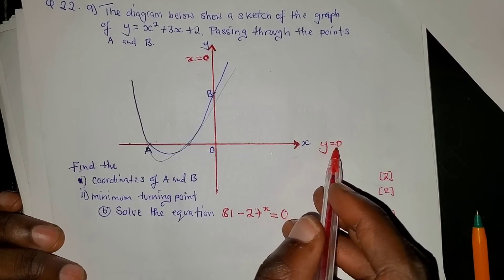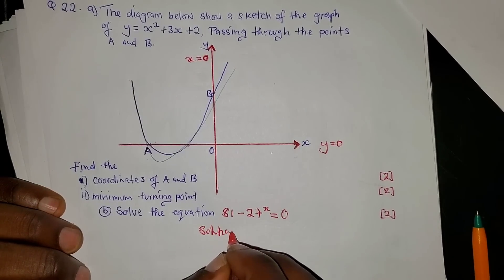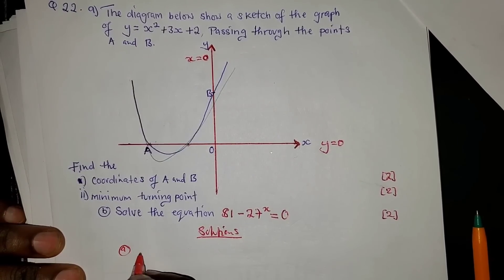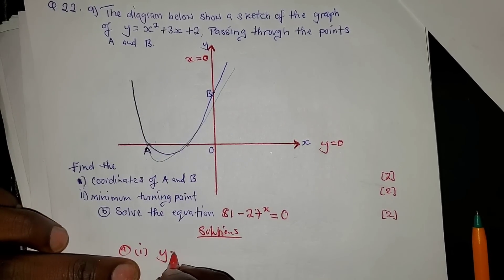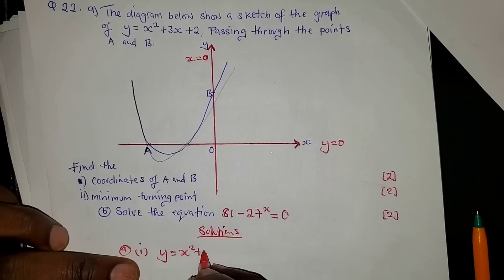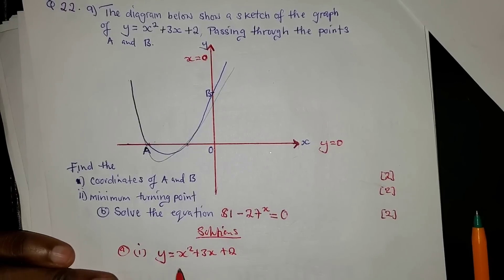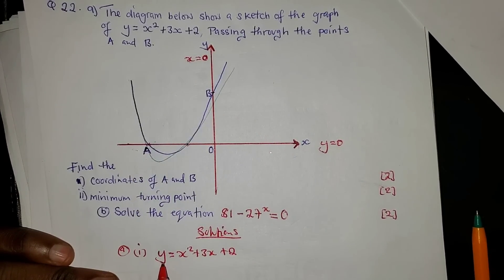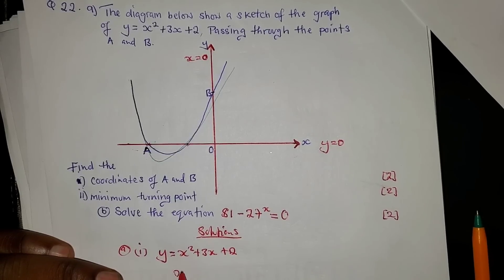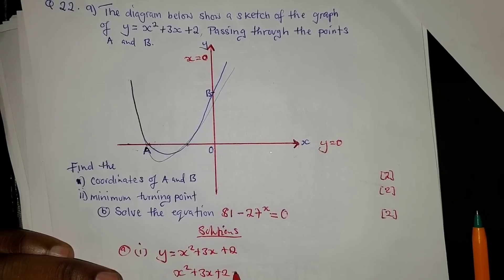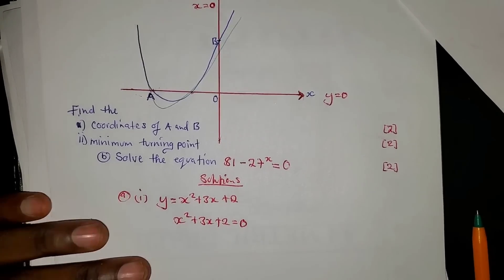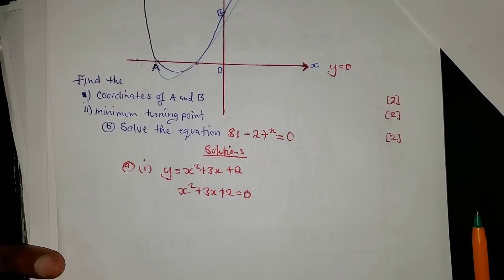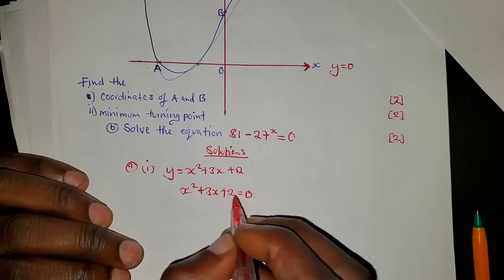To find A, substitute y = 0 into the function. We have y = x² + 3x + 2. Setting y = 0 gives x² + 3x + 2 = 0. Now let's solve for x by factorization.